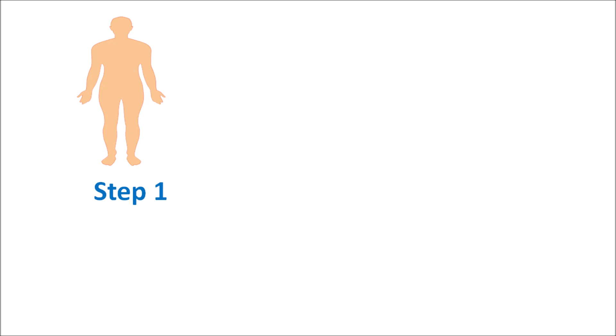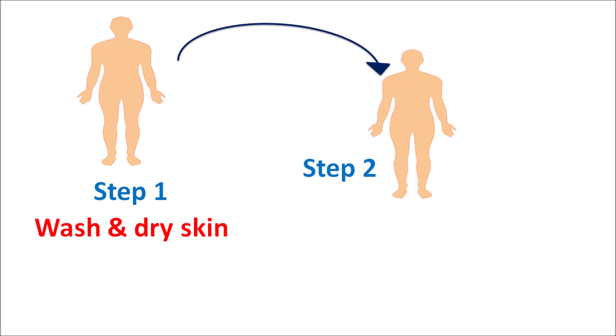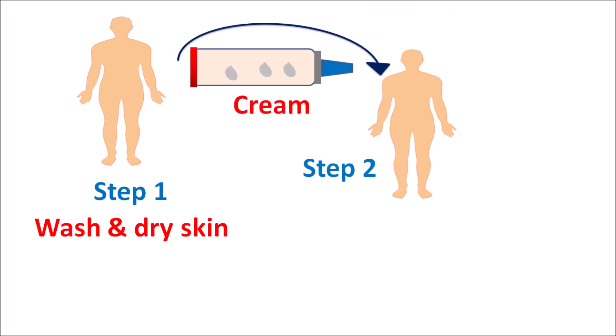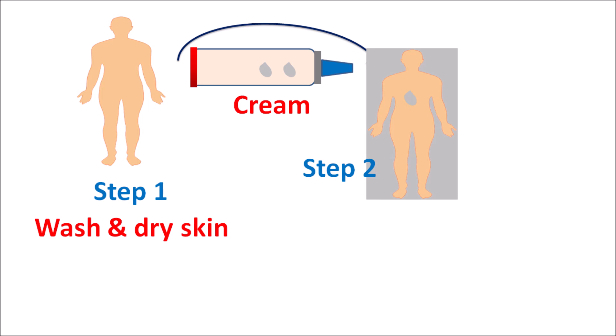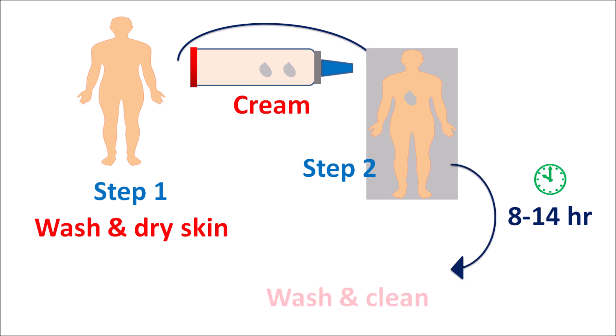Similarly, permethrin can be used for the treatment of scabies. In step one, the entire body should be thoroughly washed and dried. It can be applied on the skin in the form of a cream, which is available at 5% strength. The cream can be applied thoroughly on the entire skin from head to toe such that it is uniformly distributed, then left for at least 8 to 14 hours, after which it can be washed off. However, when this product is initially applied, it can increase the symptoms of scabies, resulting in increased irritation and itching.